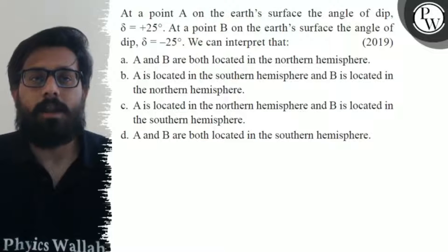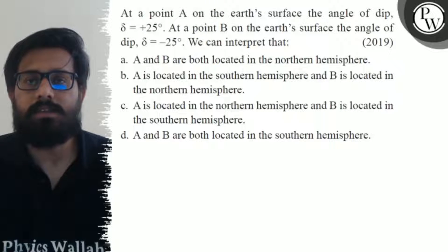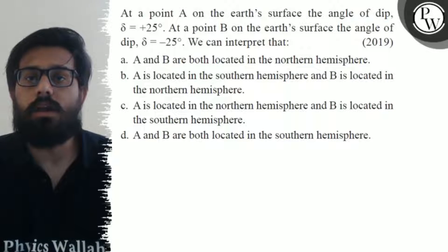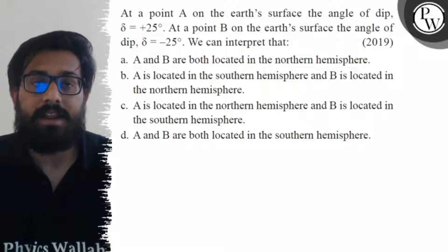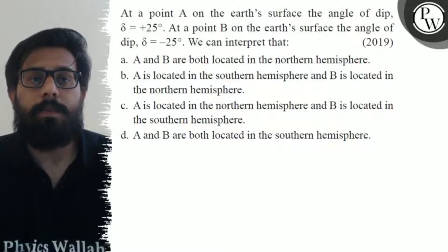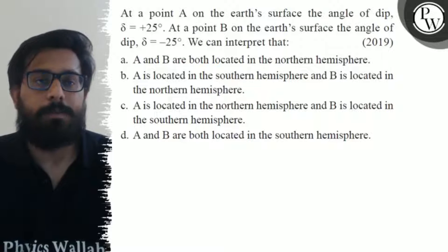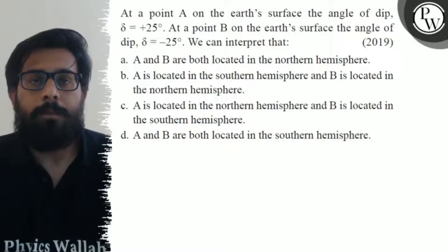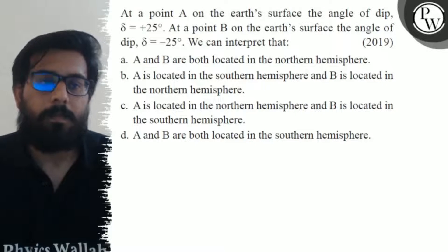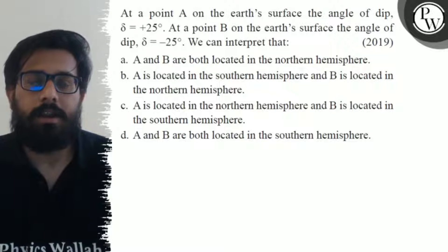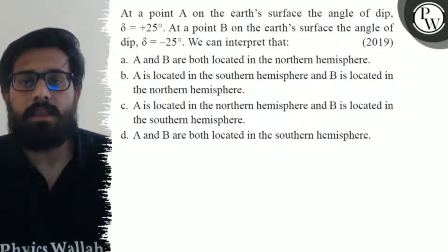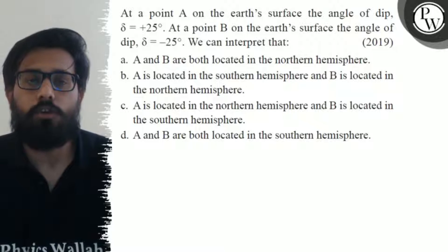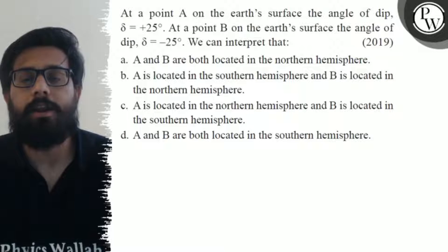Hello, Bacho. Let's see the question. At a point A on the Earth's surface, the angle of dip is plus 25 degrees. At a point B on the Earth's surface, the angle of dip is negative. We can interpret that A and B are located in the Northern Hemisphere. Second option: A is in the Southern Hemisphere and B is in the Northern Hemisphere. Third option: A is in the Northern Hemisphere and B is in the Southern Hemisphere. Fourth option: A and B both are in the Southern Hemisphere.